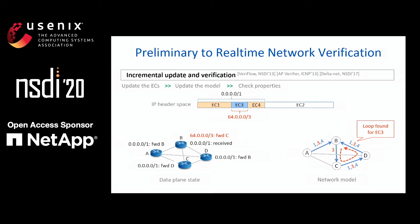Since we can efficiently verify reachability properties on the model, the key thing to achieve real-time verification is how to fast update the equivalent classes. Redflow and DirtNet can update equivalent classes for single-dimensional forwarding rules in less than one millisecond. APVerifier computes the minimal number of equivalent classes, which is very important to verify general multi-field rules. APKIP is also based on this packet equivalent class theory, and it can update the minimum number of equivalent classes, and in addition, it uses new algorithms to fast update them.